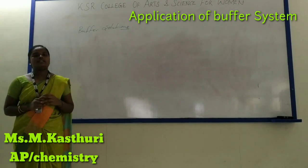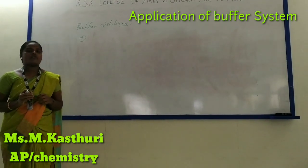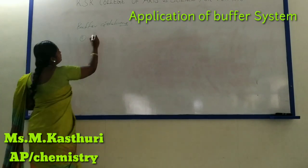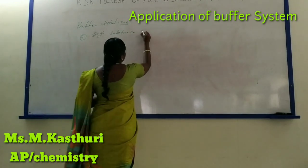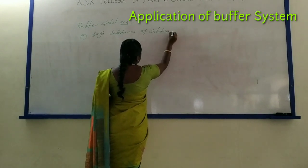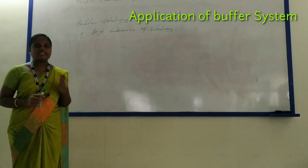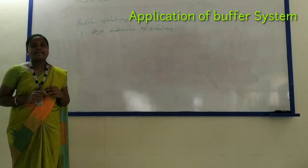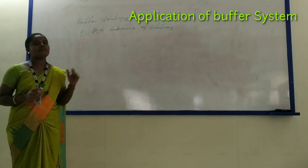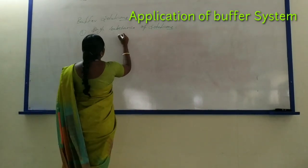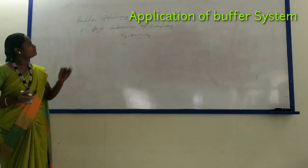Buffer solution is classified under two types. The first one is single substance solutions and the next one is mixture of solutions. Single substance solutions means it is a salt containing one weak acid and one weak base. For example, acetic acid — one of the weak acids — and ammonium hydroxide — one of the weak bases — make the salt ammonium acetate. This is one example of single substance solutions.